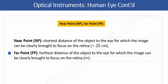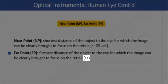In contrast to the near point, the far point is the furthest distance of the object to the eye for which the image can be clearly brought to focus on the retina. In a normal eye, this is essentially infinity.